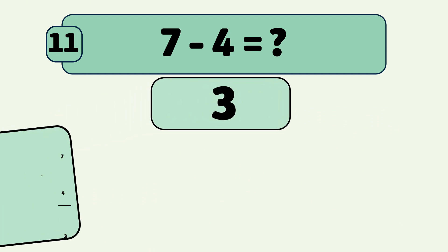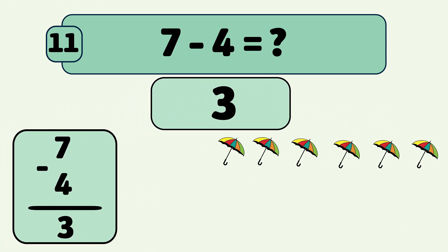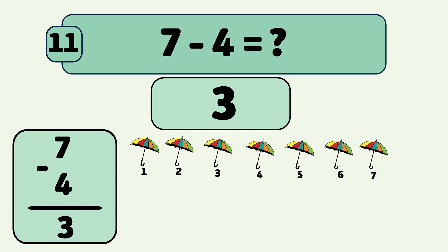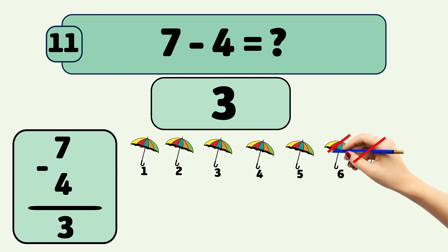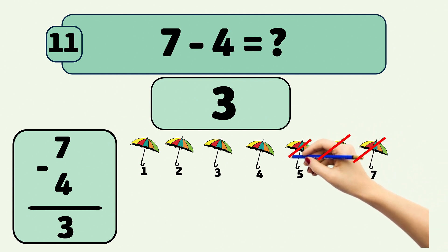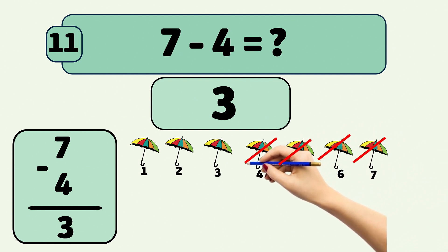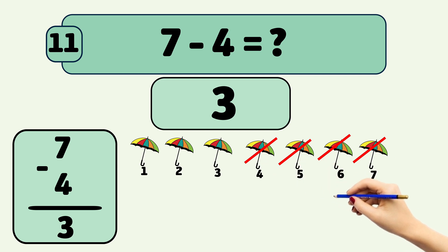What is 7 minus 4? The answer is 3. We start with 7 umbrellas and remove them one by one: 7, 6, 5, 4. Now we have 3 umbrellas left.